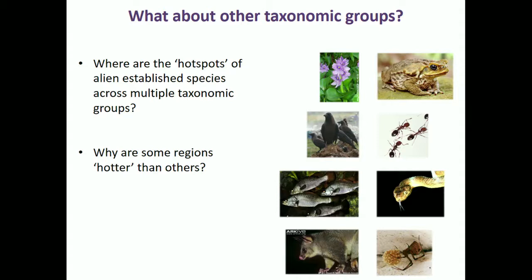I'm assessing why some regions tend to be hotter than others across those taxonomic groups, and I've been looking at how similar global patterns are for different taxonomic groups when we compare them.